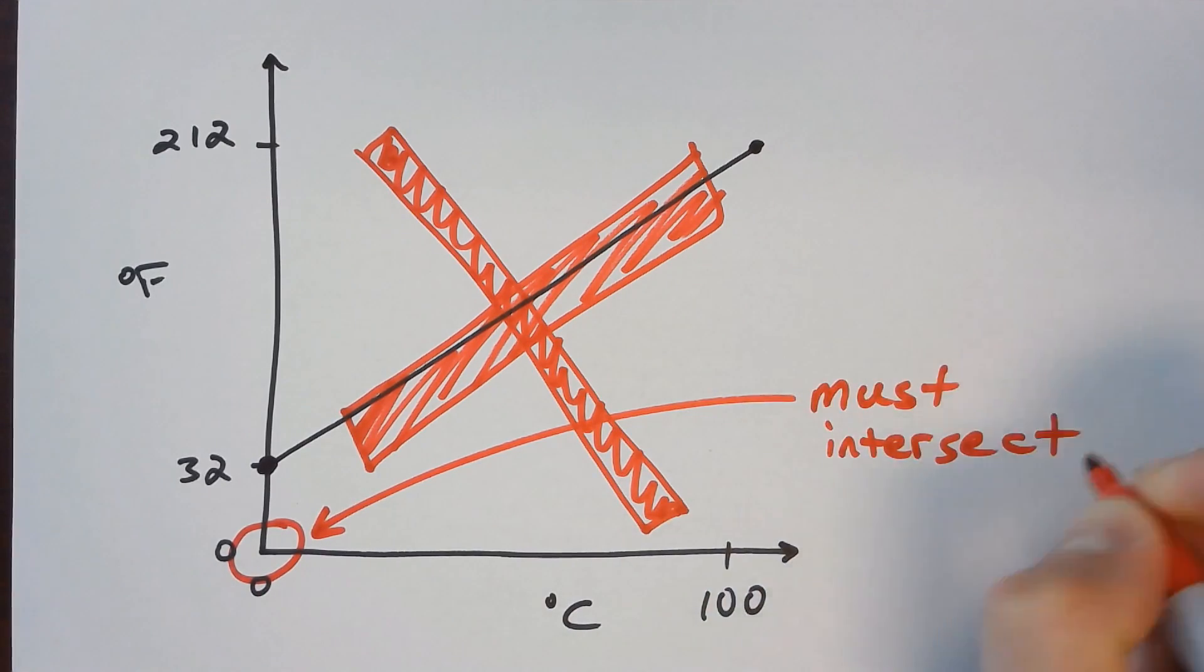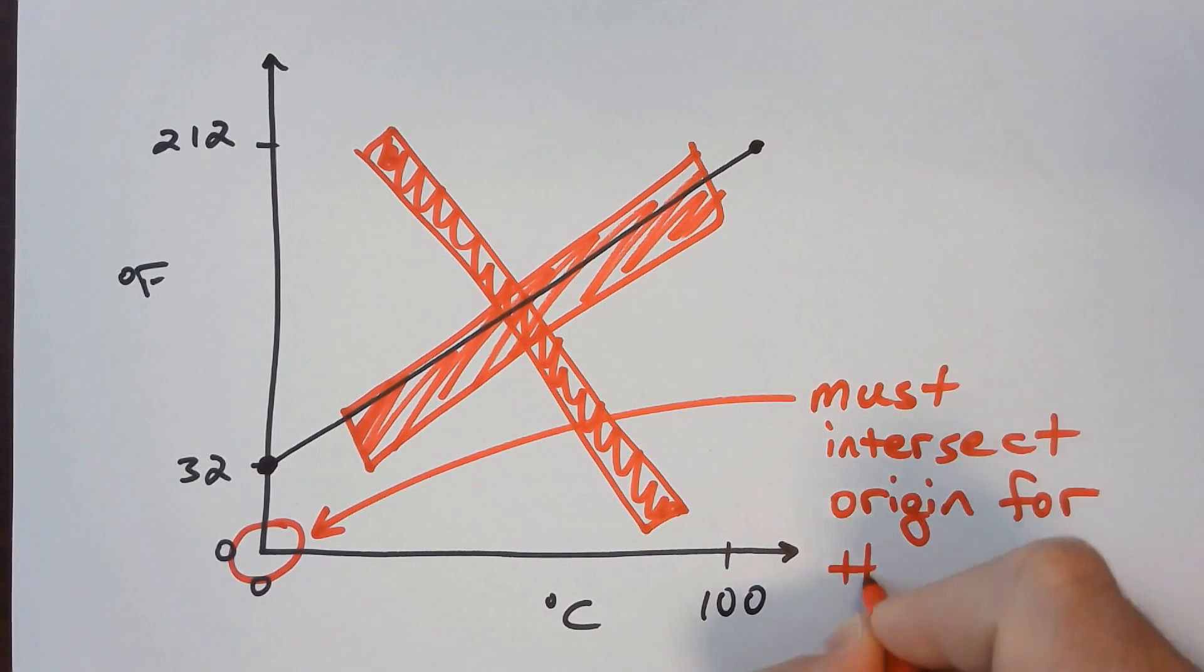But notice that the graph does not intersect zero, zero. Therefore, the method of conversion we will be discussing does not directly apply to temperature conversions.